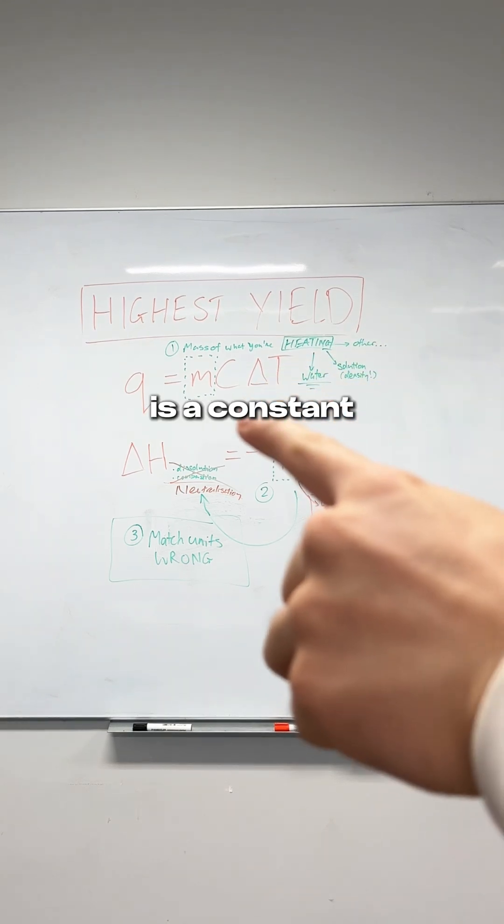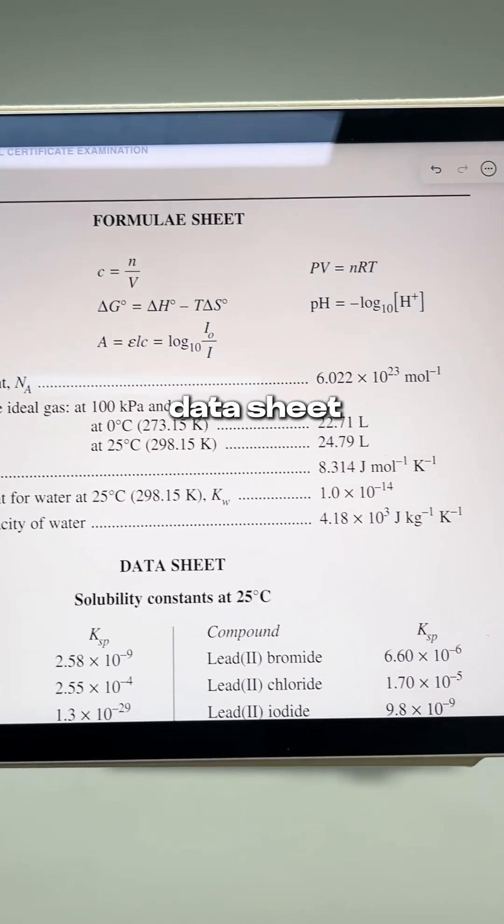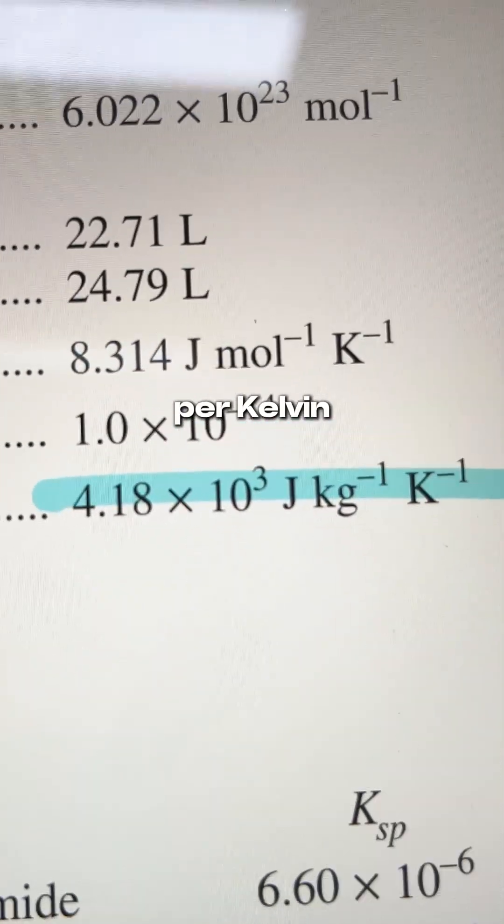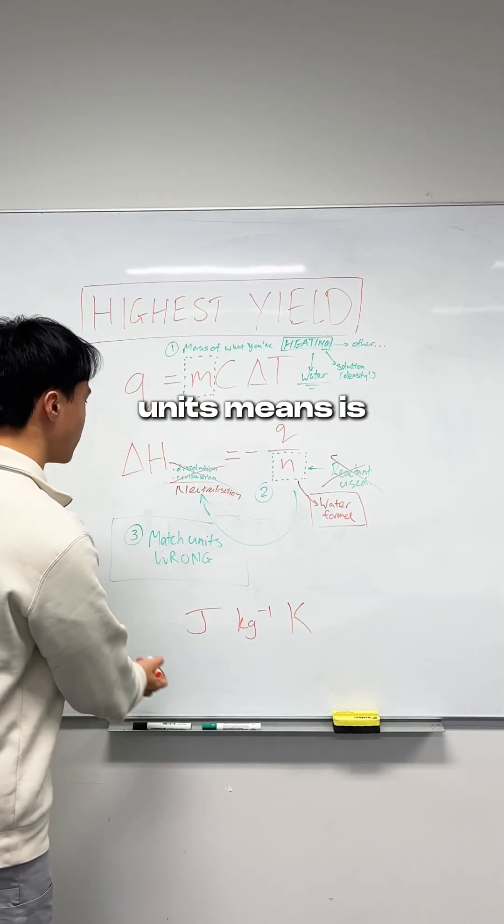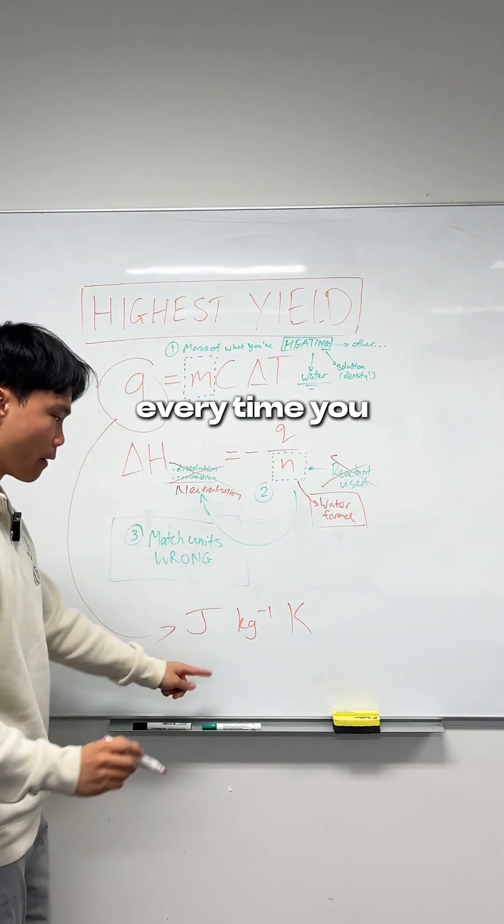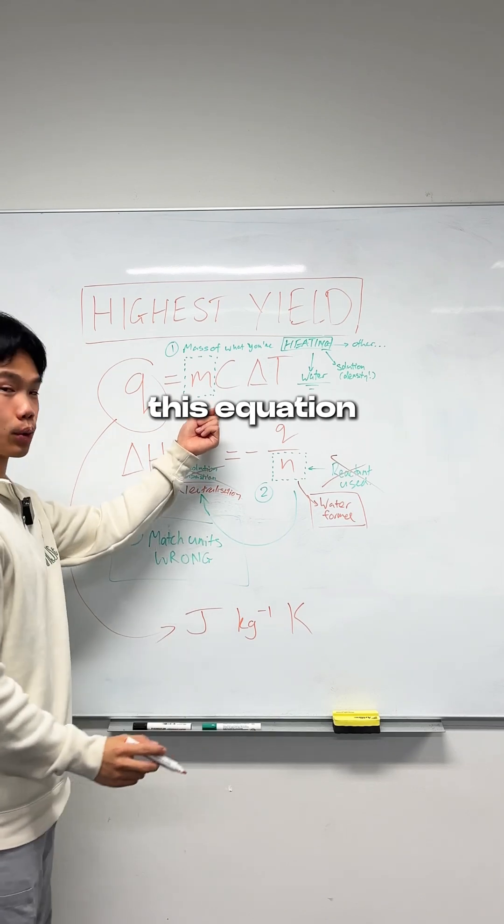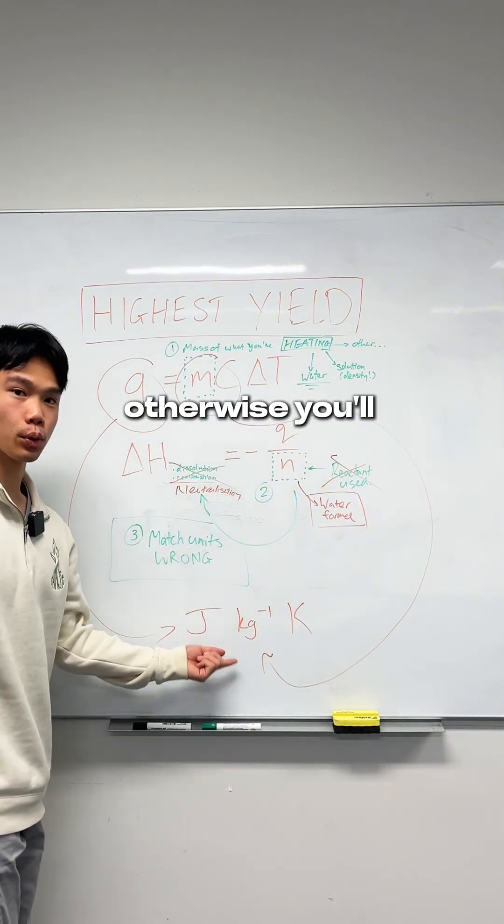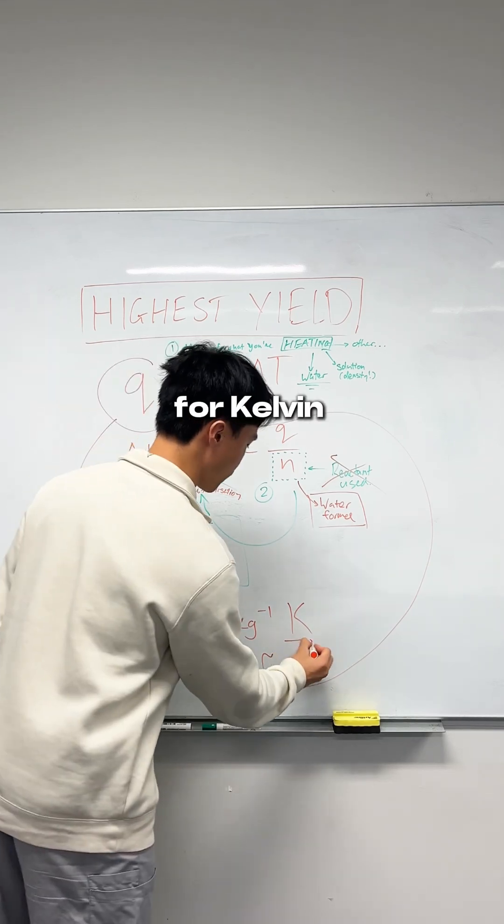In these calculations, C is a constant which you can get from your data sheet as 4.18 × 10³ joules per kilogram per kelvin. And so what matching your units means is when you talk about Q, Q has to be in terms of joules every time you use it for this equation. Your mass has to be in terms of kilograms, otherwise you'll be out by a factor of a thousand. And same for kelvin as well.